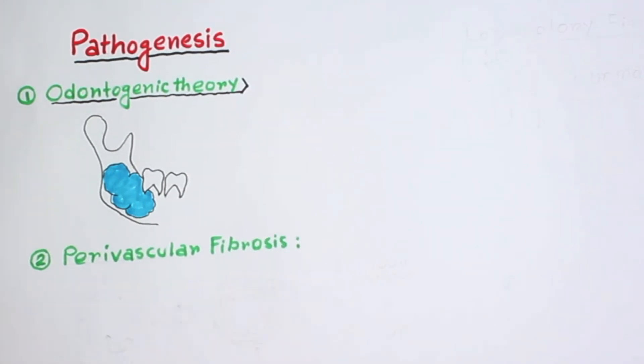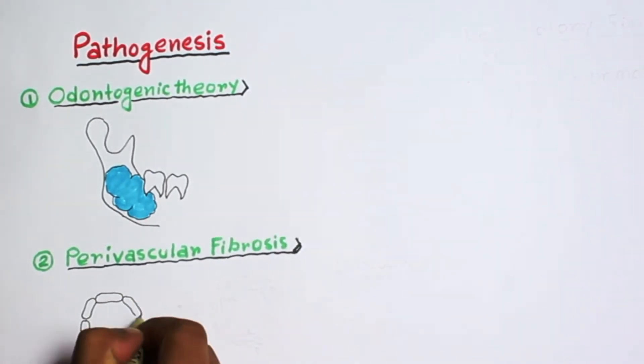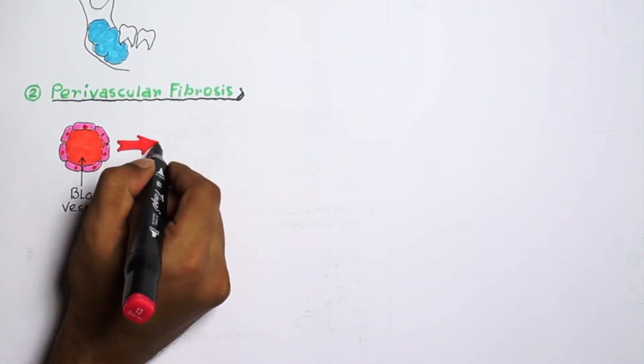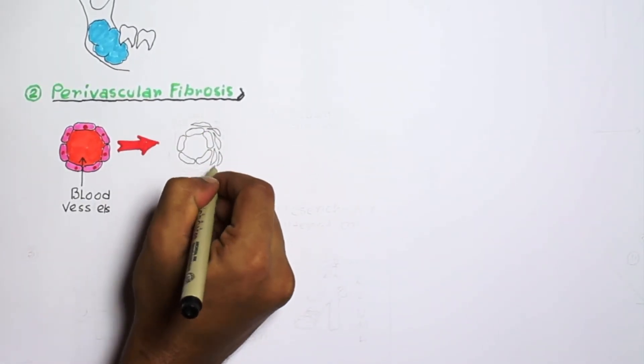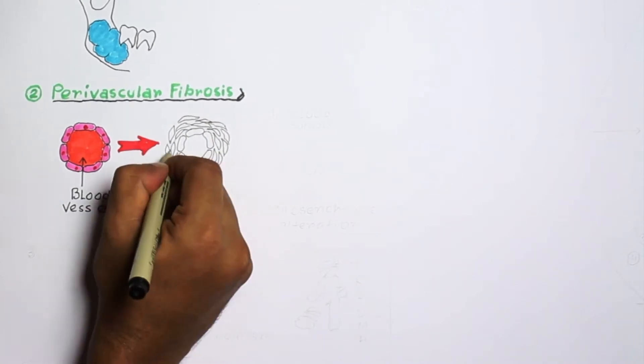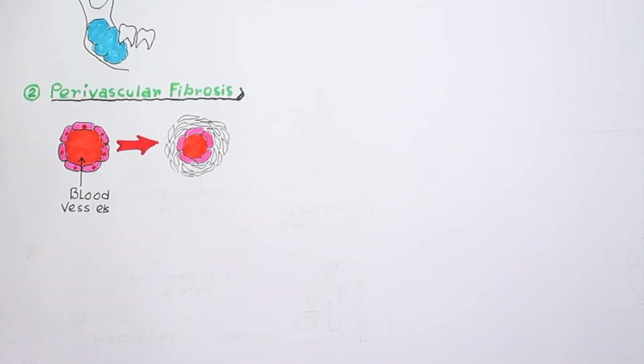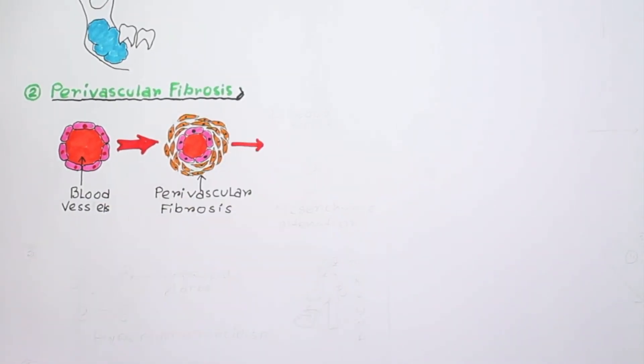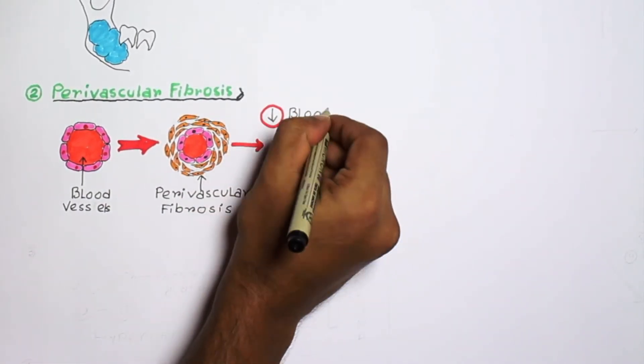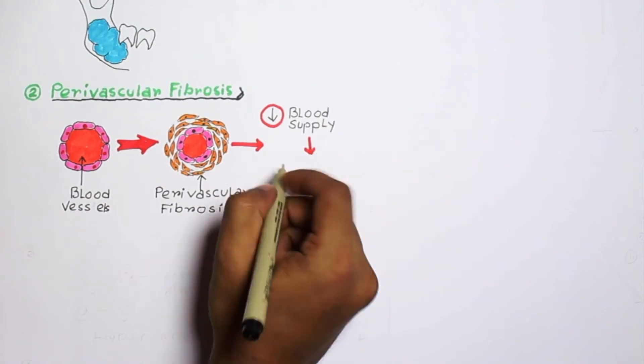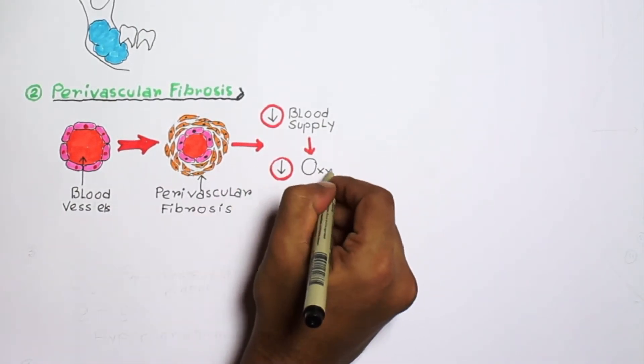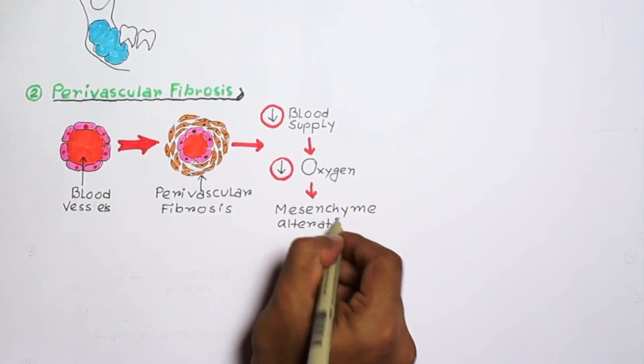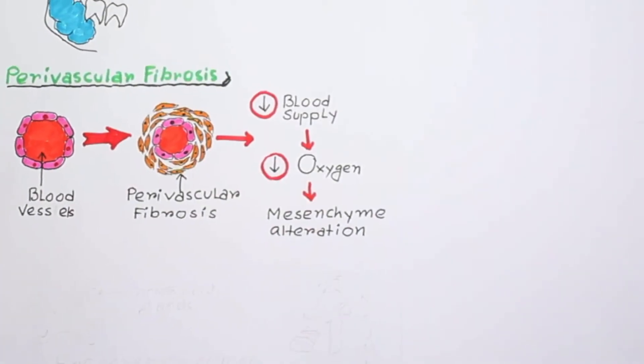Now the second hypothesis is perivascular fibrosis. Here you can see the normal blood vessel and here the fibrosis or fibrous tissue surrounding the blood vessels which causes narrowing. The fibrosis results in reduced blood supply which leads to reduced oxygenation of bone and an alteration of the mesenchyme during bone development.